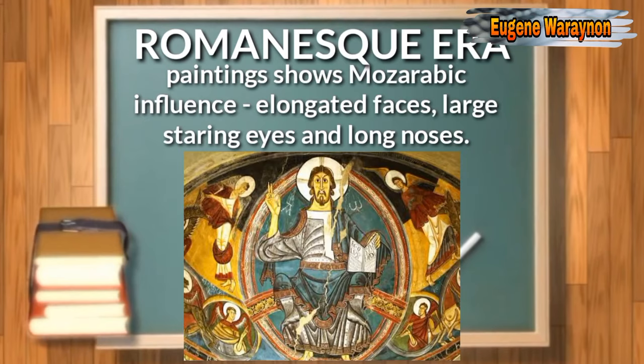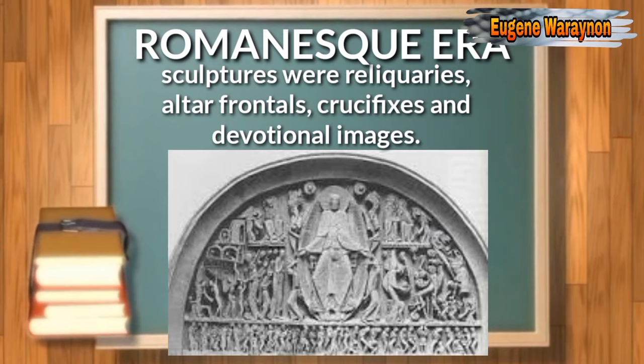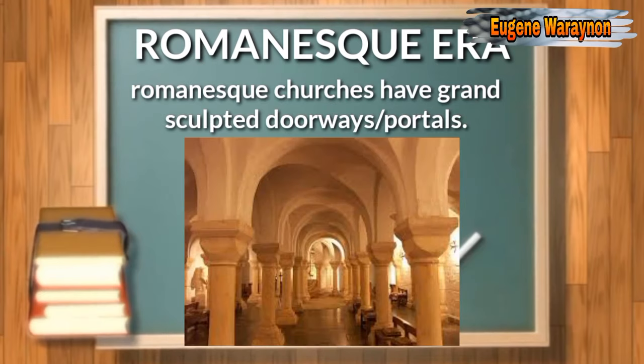Romanesque paintings were usually Byzantine-influenced, meaning elongated oval faces, large staring eyes, and long noses, figures against flat colored bands, and heavy outlining. Sculptures include famous pieces such as reliquaries, altar frontals, crucifixes, and devotional images — small works made of costly materials for royal and aristocratic patrons. Architecture, usually for churches, features grand sculpted doorways and portals. Wood or metal doors are surrounded by elaborate stone sculptures arranged in zones to fit architectural elements.